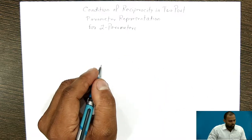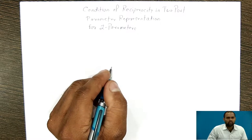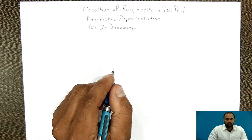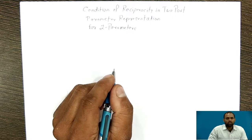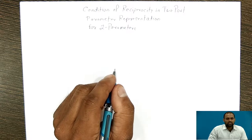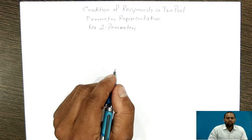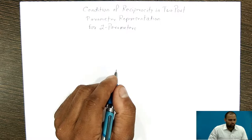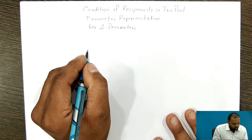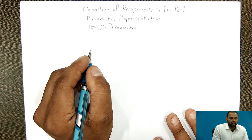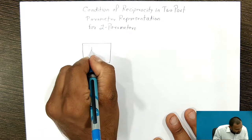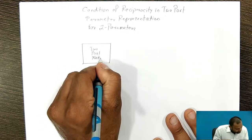While studying this, we have to write down the equations related to Z Parameter, but before that we will see what is the Condition of Reciprocity. Basically, a network is said to be reciprocal if the ratio of excitation variable and response variable of a Two-Port Network is the same, even if we interchange the excitation as well as the response of a Two-Port Network. First, we will draw the diagram related to that excitation variable as well as response variable for this Two-Port Network.